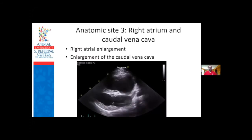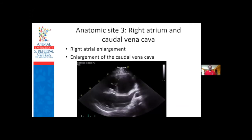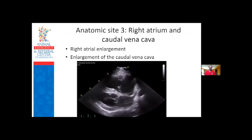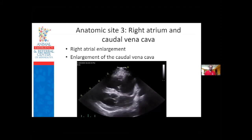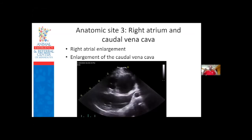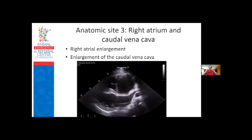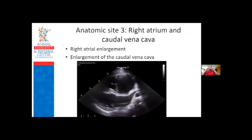The last site on echo is the right heart. Is the right atrium enlarged? Especially with a significant tricuspid leak, it can enlarge. Is there right heart failure? Is the caudal cava dilated where it enters the right atrium and where it crosses the diaphragm? A normal caudal cava collapses with breathing where it crosses the diaphragm, but in right heart failure it becomes distended and may not collapse as well.